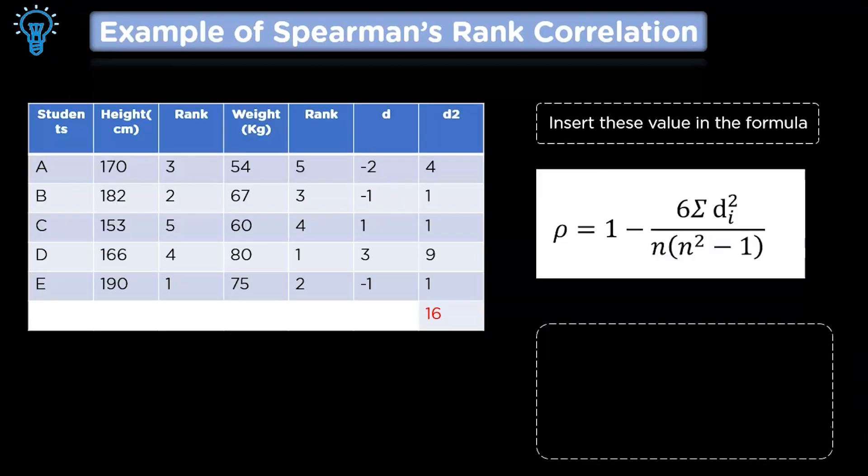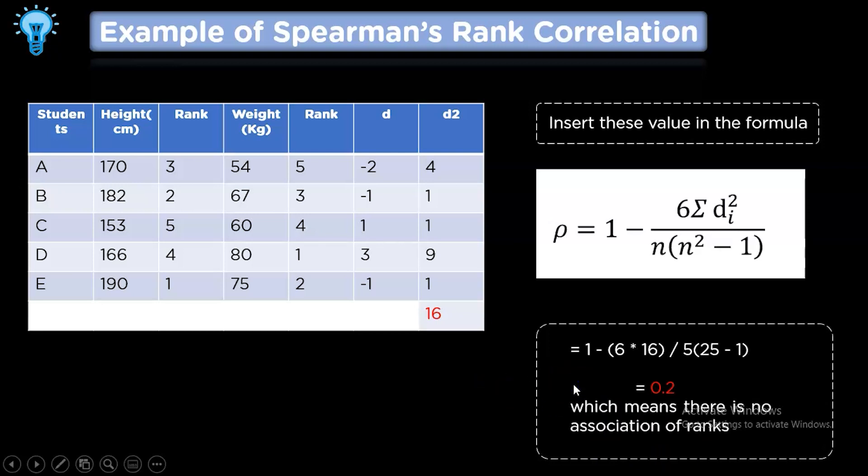Now that we have all the required values, we will substitute the values in this formula, where rho equals 1 minus 6 sigma di square divided by n times n square minus 1, where di is the summation of d square value and n is the number of observations. So substituting this value, we will get the value to be 0.2, which shows that there is no association between the ranks.